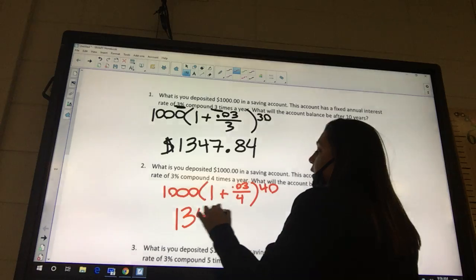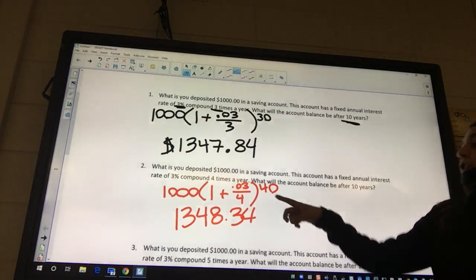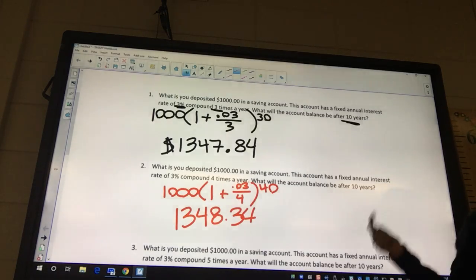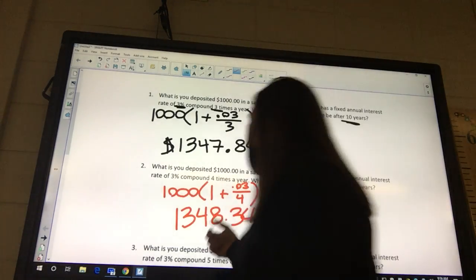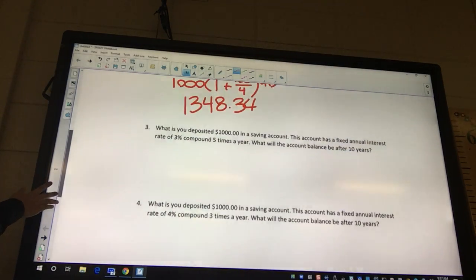Okay, so the only thing that changed was instead we compounded 4 times a year. So with them checking it more times a year, we got more money, not a lot but a dollar something, not even a dollar.